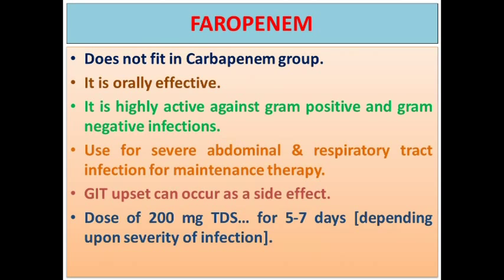Faropenem does not strictly fit in the carbapenem group but is discussed here as it is orally effective — that is the key take-home message. It is highly active against gram-positive and gram-negative infections, used for severe and resistant cases and for maintenance therapy. Since it is oral, it is suitable for sending patients home on maintenance therapy. GI upset and diarrhea can be important side effects. Dose is 200 mg three times a day for 5 to 7 days depending on severity.